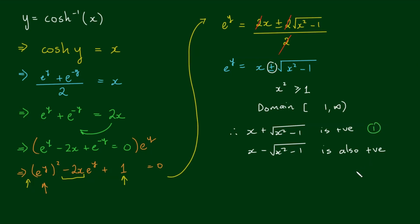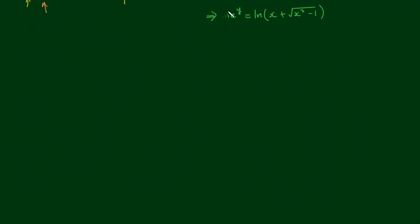Let's consider the case with the plus sign first. We have e to the y equals x plus the square root of x squared minus 1. If we take the log of both sides, we get the natural log of e to the y equals the natural log of x plus the square root of x squared minus 1. The natural log and e are inverse functions, so we simply get y on the left-hand side, and on the right-hand side, we're left with the natural log of x plus the square root of x squared minus 1. Note that we don't need absolute value bars here, since the argument is positive. By convention, this expression is what we use for the inverse hyperbolic cosine function, the inverse cosh of x.